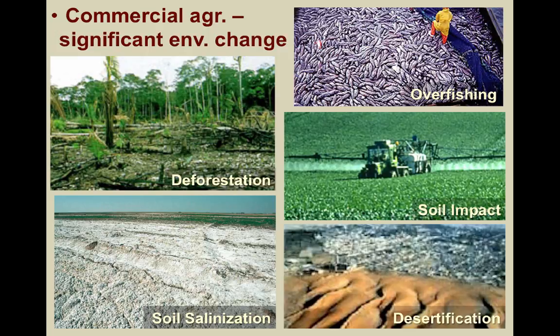Soil erosion is another major impact of agriculture, especially when it expands into marginal environments such as arid regions, which can accelerate desertification. Especially in some poorer countries, irrigation with brackish water can lead to salts collecting in the soil after evaporation, leading to increased salinization, which in turn kills plants and wildlife. Even in more developed countries, widespread farming practices can introduce harmful chemicals into the ground and, in some cases, into the local drinking water.